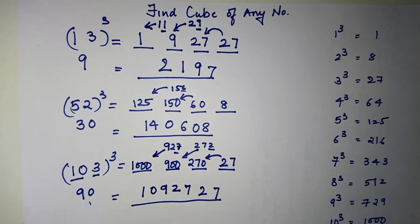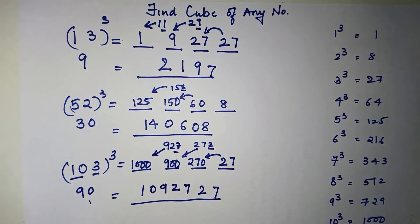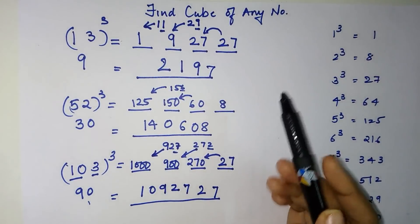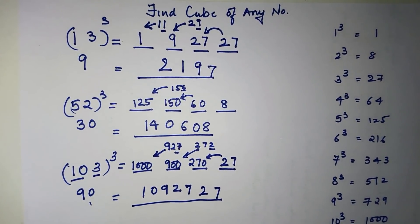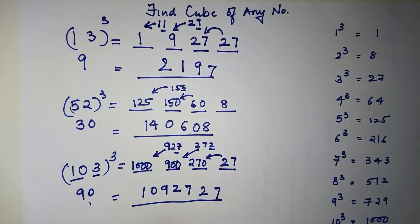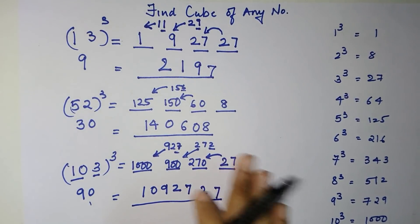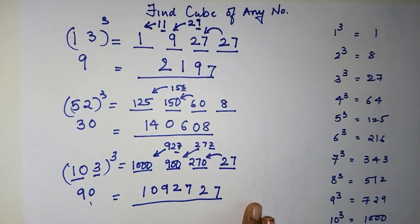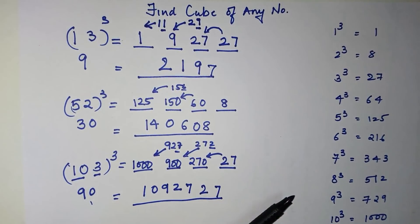As you can see, you found the cube of a large number like 103 in a matter of seconds. In this way you can find the cube of any number using this pattern. To make any of these patterns stick, you need to practice with at least five to six sums. If you have queries about other math topics, leave them in the comments and I'll try to make a video on them. Thank you.